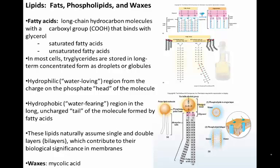Now let's talk about lipids — in layman's terms, fats. Specifically, we're talking about fats, phospholipids, and waxes. Fatty acids are the commonly termed monomer for lipids, though not all lipids are made with fatty acids. They are long-chain hydrocarbon molecules — a long chain of carbons with hydrogens attached — bound to a glycerol at the top, which links the hydrocarbons to one another.